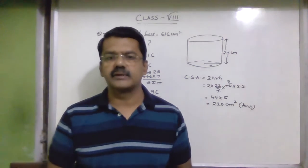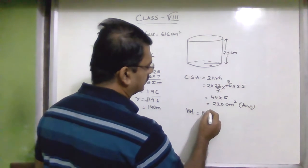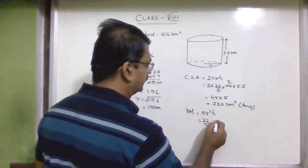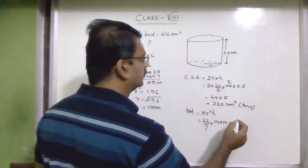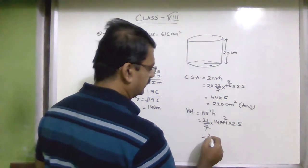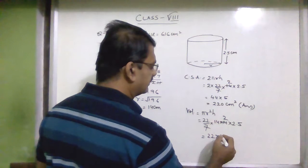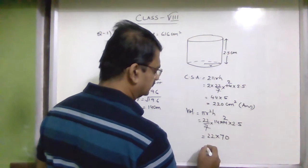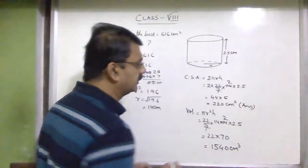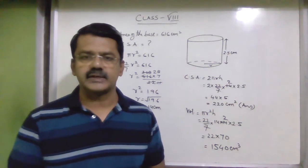Although they have not asked for the volume, the volume of a cylinder is π r² h. That is (22/7) × 14 × 14 × 2.5 = 1540 centimeter cube. So the volume of the cylinder is 1540 centimeter cube.